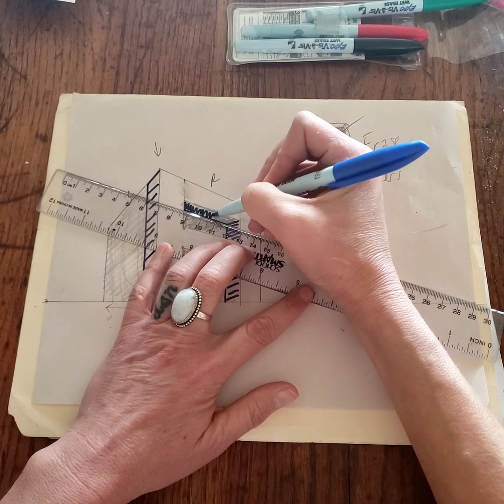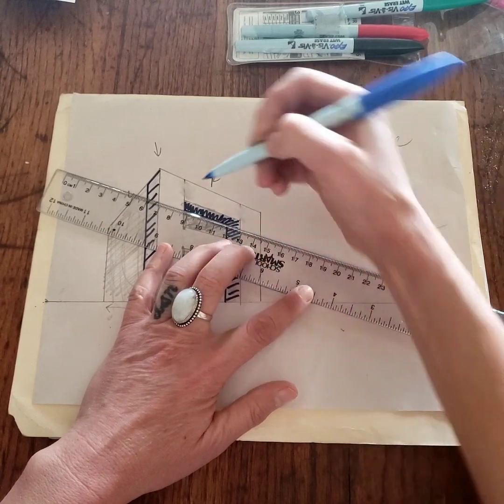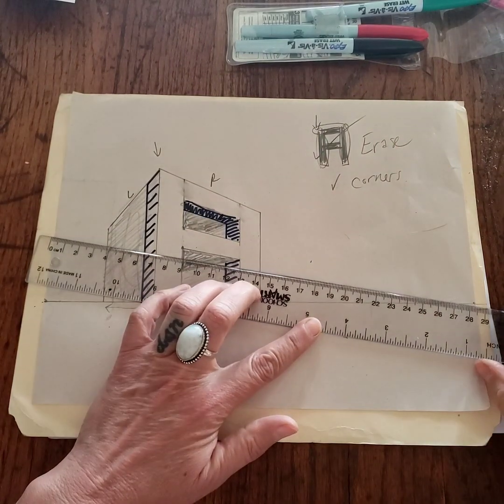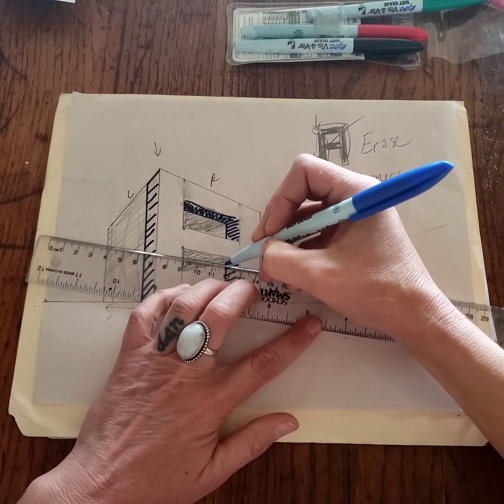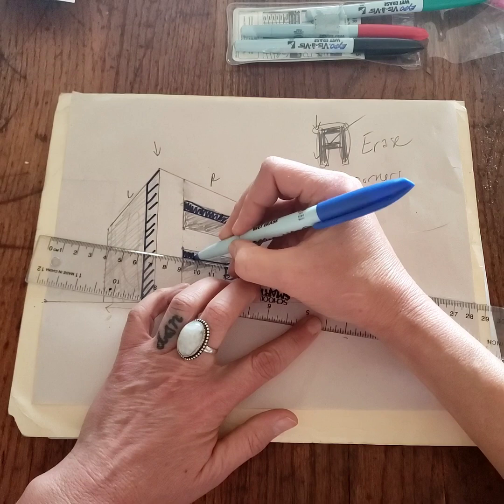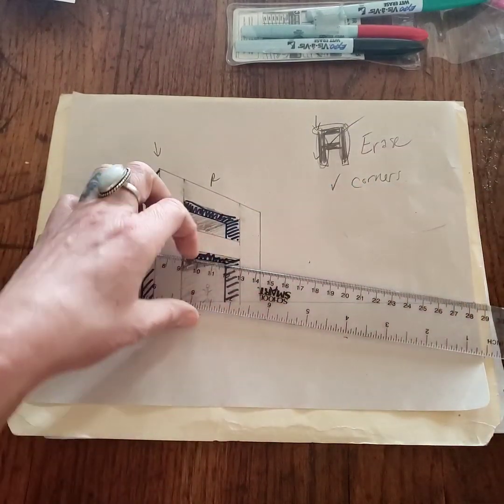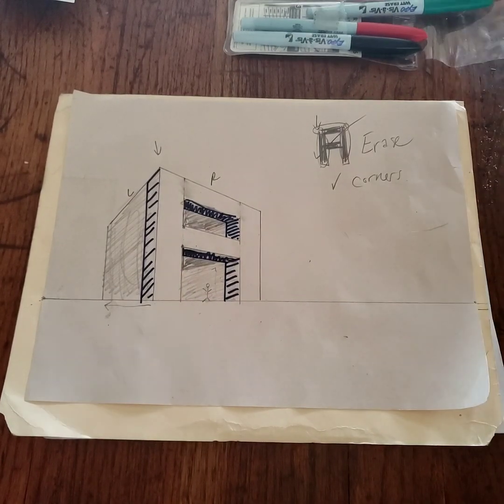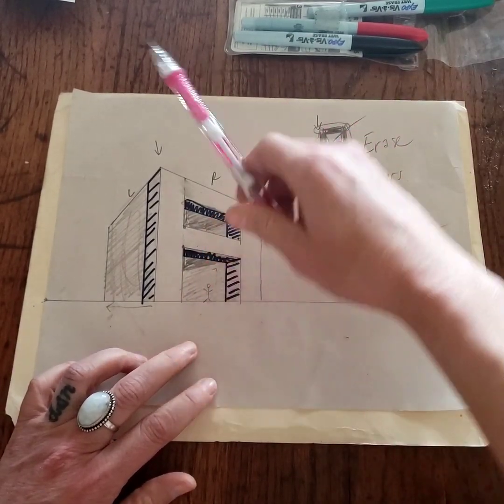So this now is our ceiling and that would be darkened in. Same with this one under here.